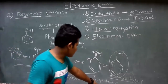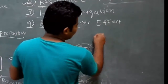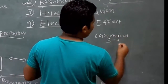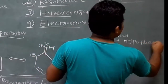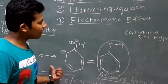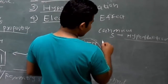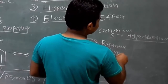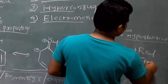Always remember: canonical structures are hypothetical structures — we only imagine these structures, that is why they are hypothetical. But the resonance hybrid is the real, actual structure of the compound.